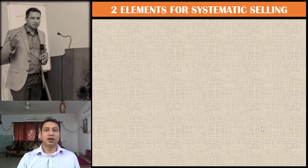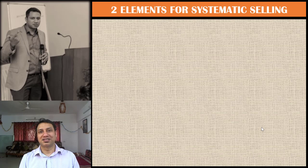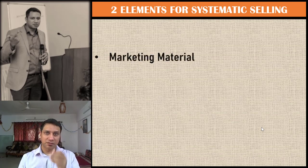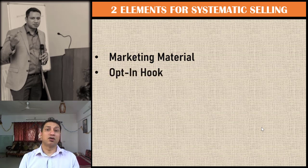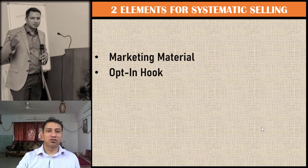The two elements we recommend to start with for a systematic sales process: the first is marketing material — the stuff you give to customers where they can access your details and see what you do. The second part is an opt-in hook, where they give you their details in a format that gets locked into your system, and then you are free to mass message them later.